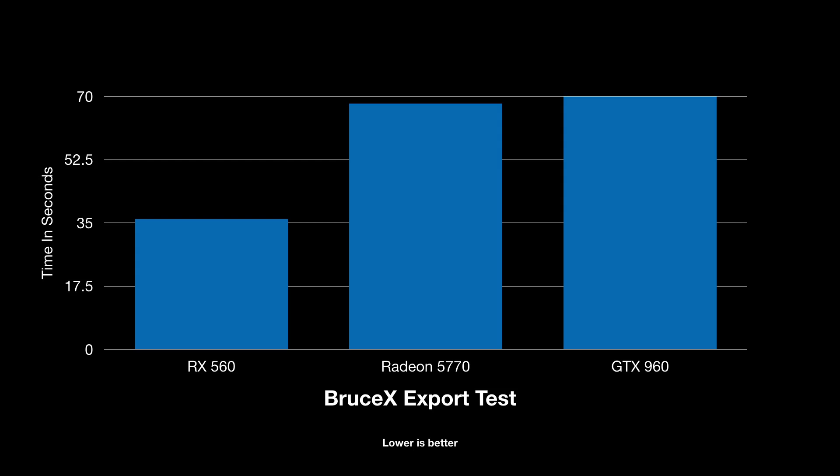The first benchmark is the Bruce X benchmark, which is a Final Cut profile that lets you see how fast your graphics card is based on the export of a 5K timeline. As you can see by the graph, I benchmarked the RX 560, the Radeon 5770, and the GTX 960. Compared to the 960, the RX 560 almost cut the export time in half. The 5770 is just a little bit faster than the 960, but not by very much. In real-world performance, this basically means cutting my export times in half.